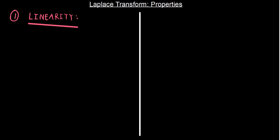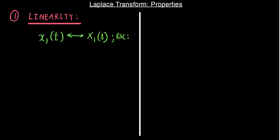The linearity property says that if we have two signals x1 and x2, where x1 has a Laplace transform capital X1 with a region of convergence R1 — R being the set of values of sigma for which x1 converges — and x2 has a Laplace transform X2 with a region of convergence R2.